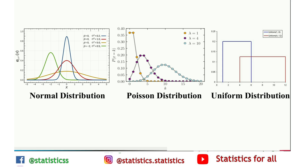Normal distribution, commonly referred to as the Gaussian distribution, is especially focused on its mean and standard deviation. The mean value shifts the distribution, and the standard deviation controls the spread. The Poisson distribution is similar to the normal distribution, but this distribution adds a factor of skewness.